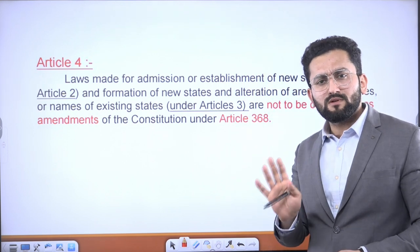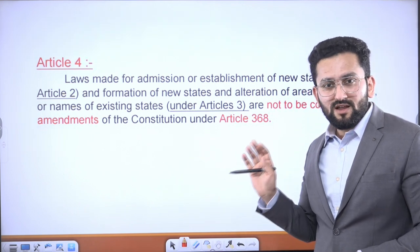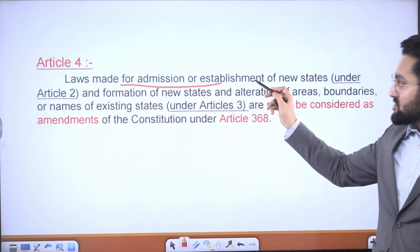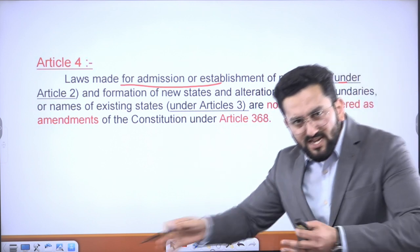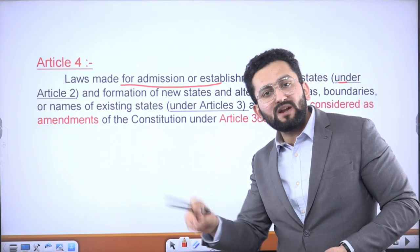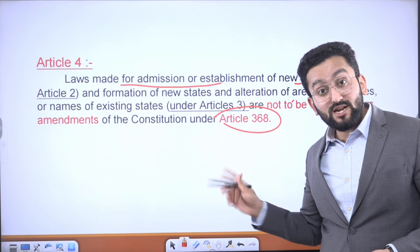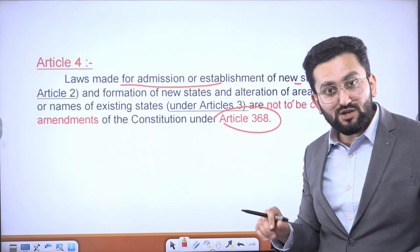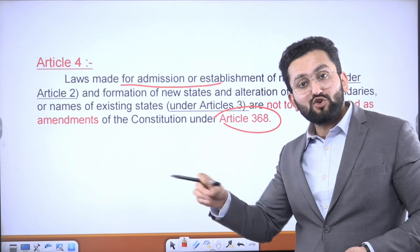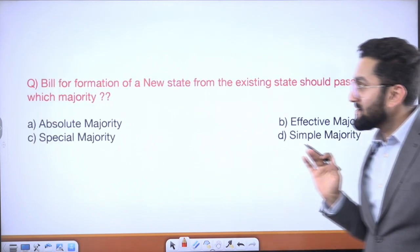Article 4 talks about the process by which you carry out Article 2 and Article 3. Article 4 says laws made for admission or establishment of new states under Article 2, or changing the boundary or name under Article 3, can be done without going through the constitutional amendment process as mentioned in Article 368. The constitutional amendment process under Article 368 requires special majority, which would be quite cumbersome. Article 4 gives you the liberty to accomplish what is needed under Articles 2 and 3 using the procedure of an ordinary bill — meaning simple majority.